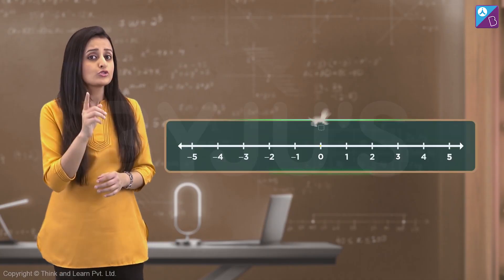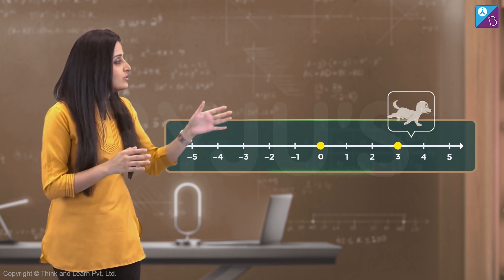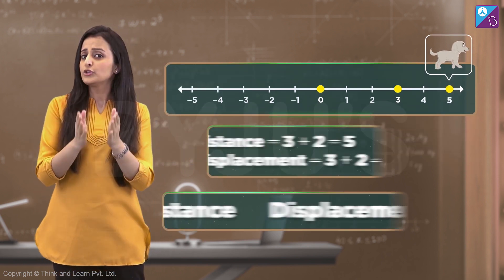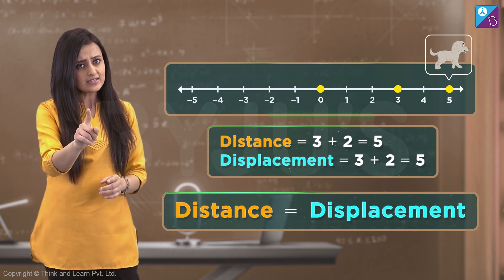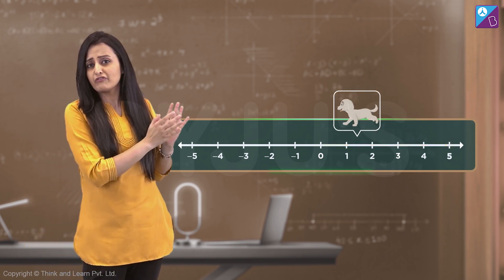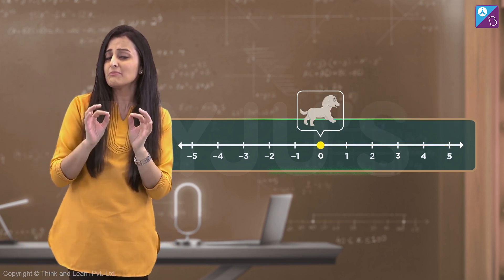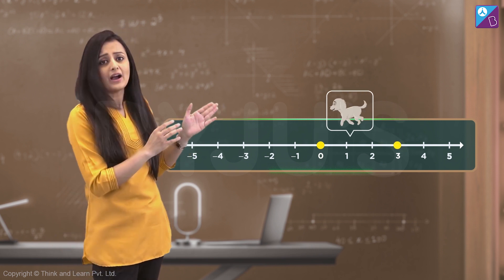All right. So if we have three steps forward and then again two steps forward, the total distance is the same as the displacement, right? But in our case, there was a lot of back and forth. To make it much simpler, say we have three steps forward and two backward.